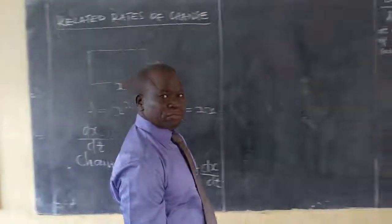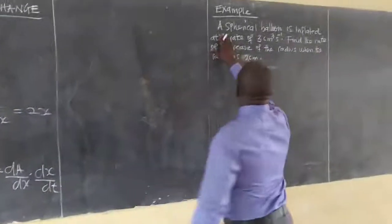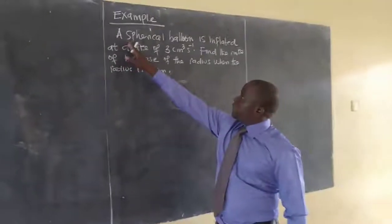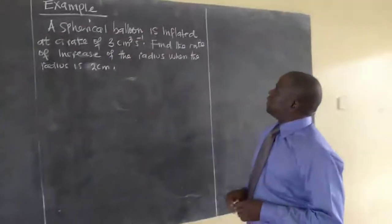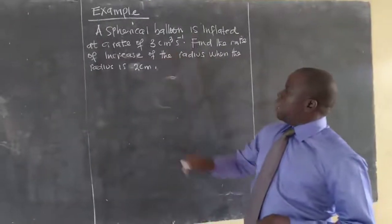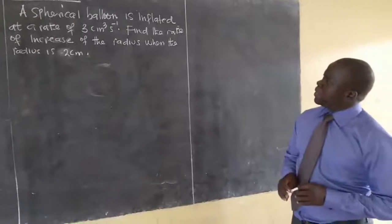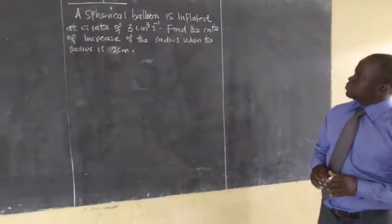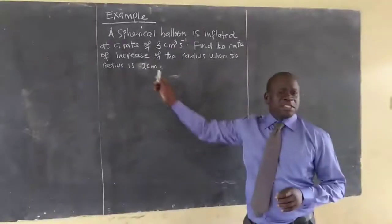Now you can do the example here. An example here says a spherical balloon is inflated at the rate of 3 cubic centimeters per second. Find the rate of increase of the radius when it is 2 centimeters.